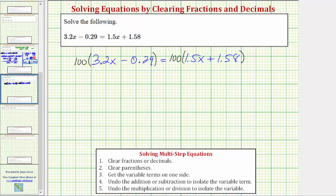Let's go ahead and show each product. So on the left, we'd have 100 times 3.2x minus 100 times 0.29 equals 100 times 1.5x plus 100 times 1.58. So 100 times 3.2x is equal to 320x. Again, 100 times 3.2 is the same as taking 3.2 and moving the decimal point to the right two places, which is one, two,